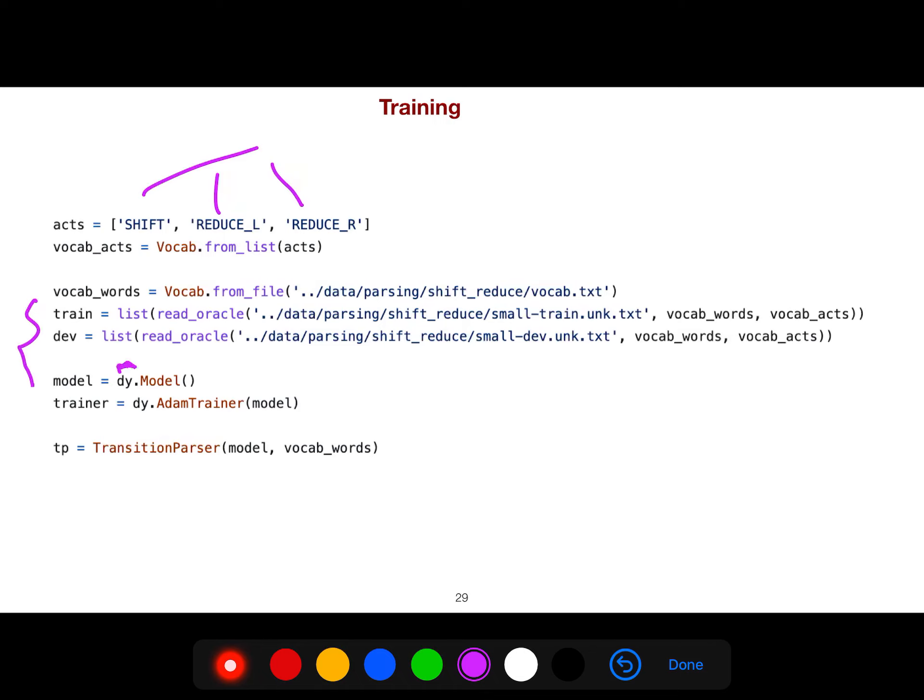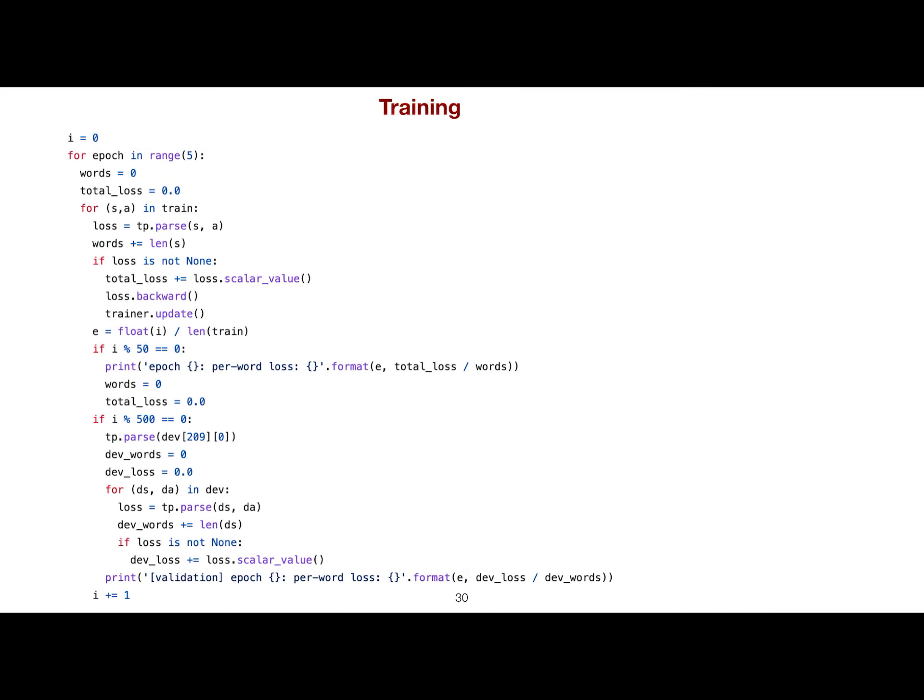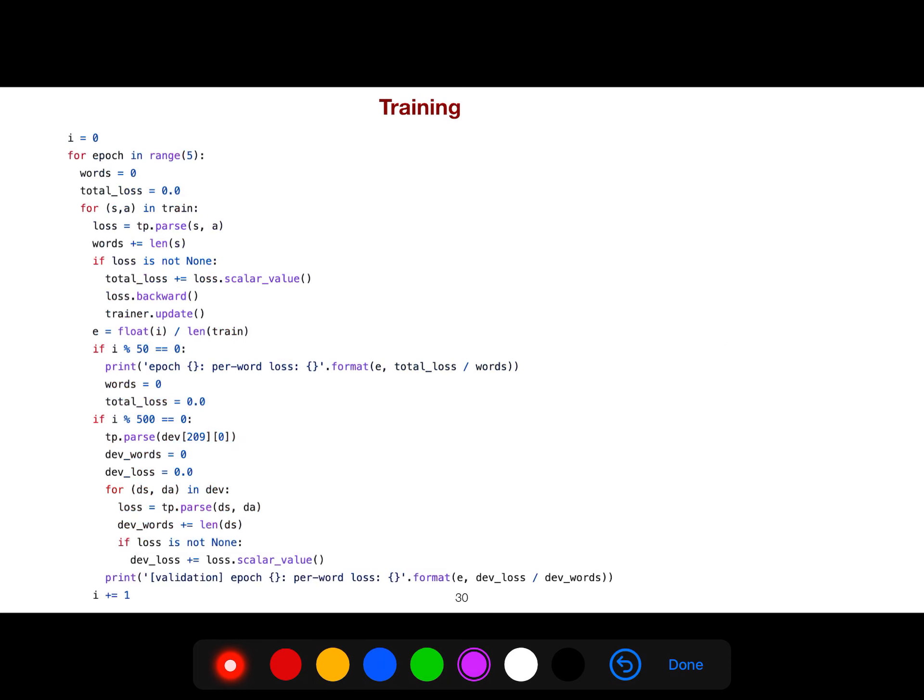You take your dataset and give it to the module. Now we use DyNet because we have a dynamic graph, and then we use Adam optimizer. For training, we pass what is our transition parser, so we get tp. Once we know tp, we parse it using that method that I explained. Now we have loss, you can backward it, and then everything is standard for any training to get validation loss and training loss and validation loss.